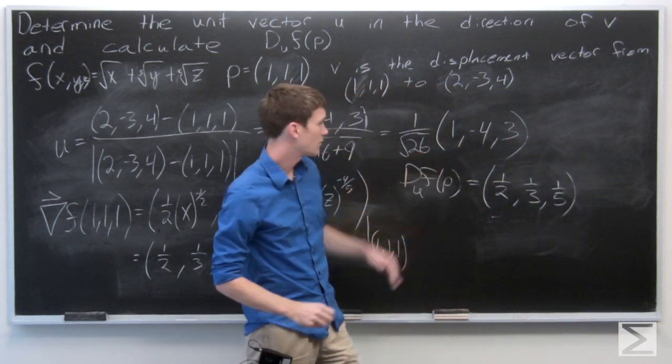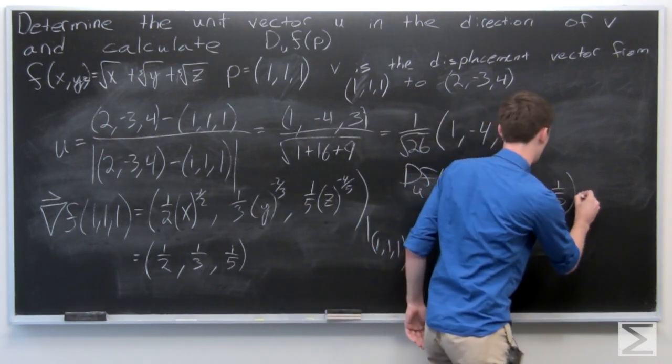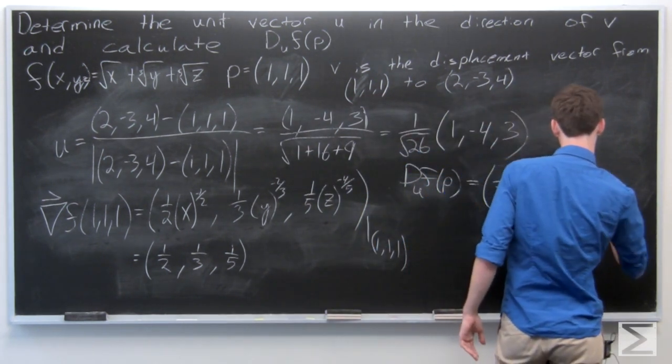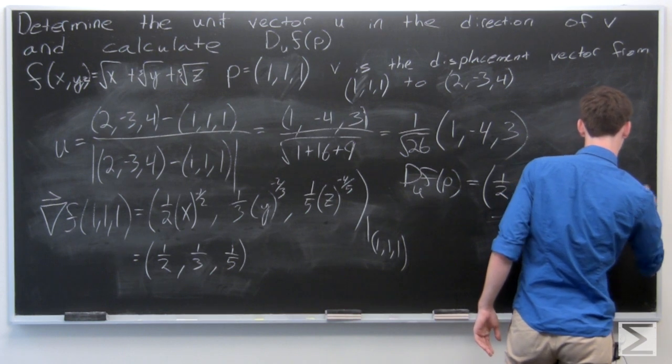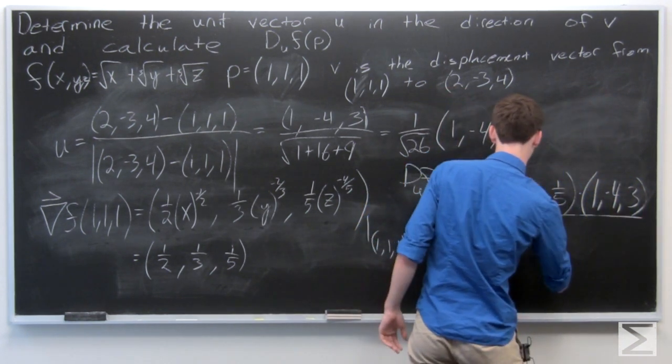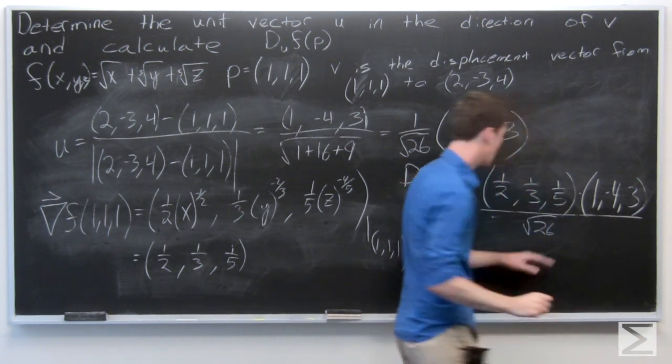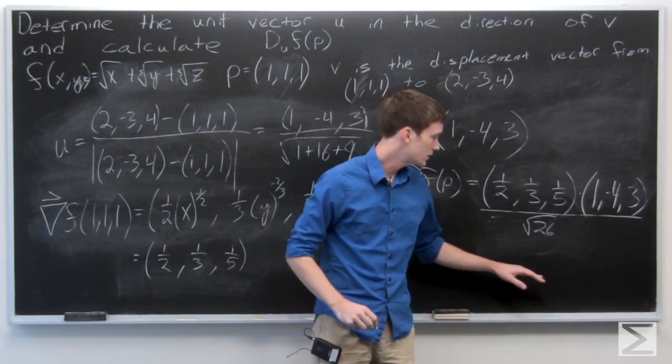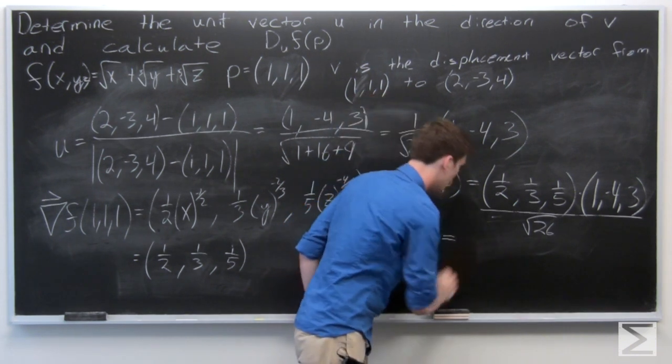Dotted with this vector, which is divided by the square root of 26. And we can calculate that.